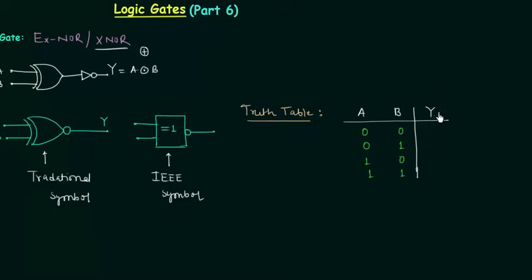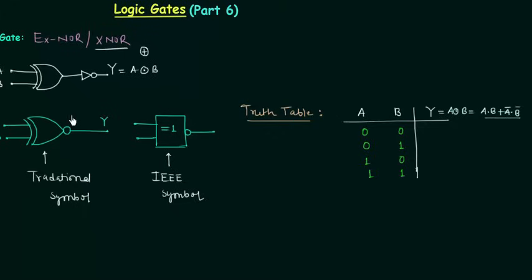There are two ways to find the output Y. Y equals A XNOR B, and its expansion is: A·B + A'·B'. You can put the values of A and B into this expression to get Y, or simply complement the XOR truth table. For A=0, B=0: we get 0·0 + 1·1 = 0 + 1 = 1.